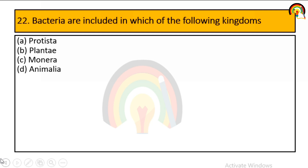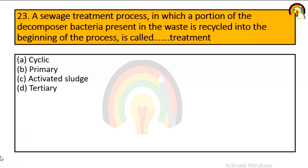Bacteria are included in which of the following kingdoms: Protista, Plantae, Monera, or Animalia? Bacteria are mainly included in the Monera kingdom. A sewage treatment process in which a portion of decomposer bacteria present in waste is recycled into the beginning of the process is called what treatment? It is called activated sludge treatment.